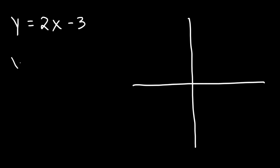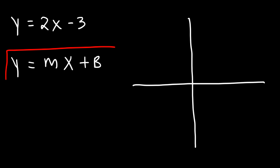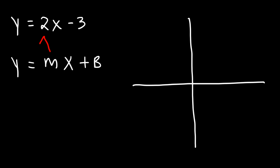This equation is in something known as slope-intercept form. Perhaps you've seen that equation: y equals mx plus b. The number in front of x is the slope, and b is the y-intercept. So we can see that the slope, which is m, is equal to 2, and the y-intercept is equal to negative 3.